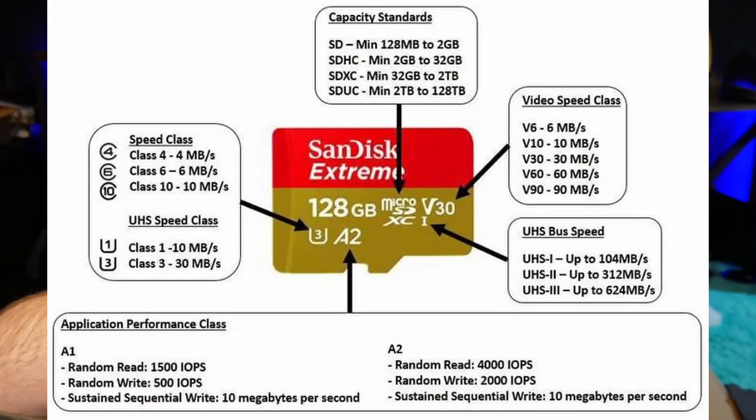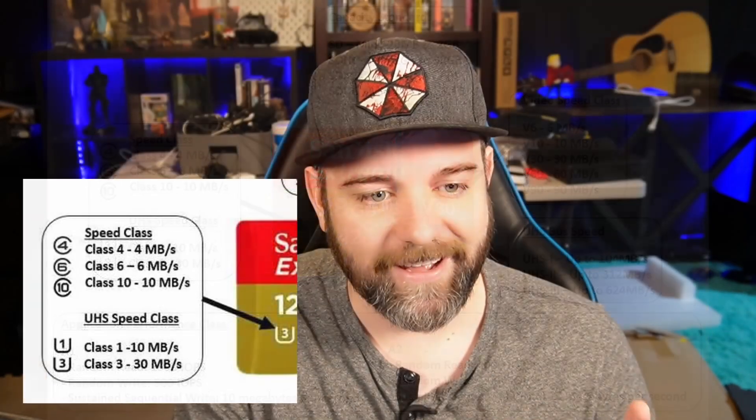Let's clear the air on what these symbols mean. You have a circle or a U-shaped symbol with a number — those are your speed classes and write speed classes. You have UHS, which is ultra high speed, which is the U, and that's the one you typically want to shoot for. Cards like the SanDisk Ultra have class 10, with the circle, meaning 10 megabytes per second. The UHS class 1 on the Ultra is also 10 megabytes per second, so that one isn't going to matter too much.